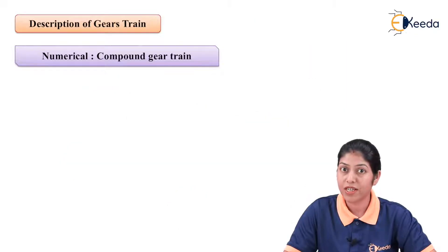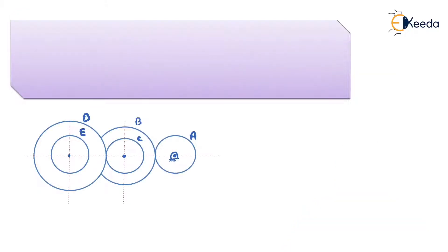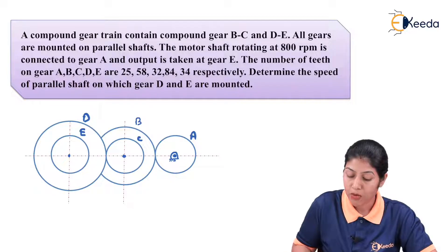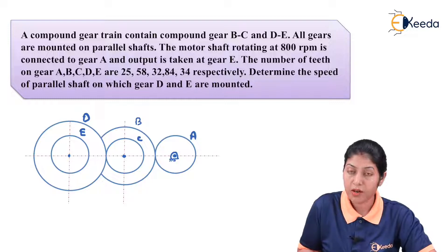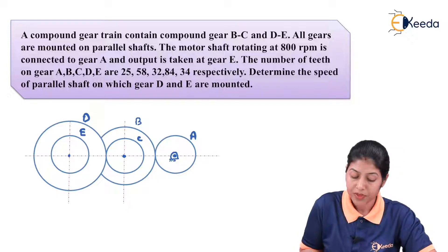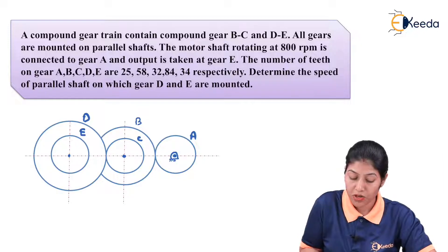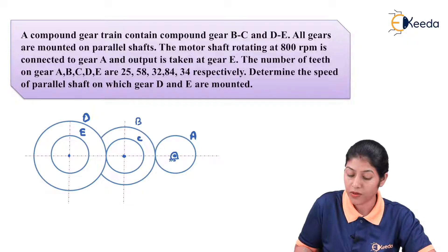Let's start the numerical which is related to the concept of compound gear train. A compound gear train contains compound gears B and C, and D and E. All gears are mounted on parallel shafts. The motor shaft rotating at 800 rpm is connected to gear A and output is taken at gear E. The number of teeth on gear A, B, C, D, E are 25, 58, 32, 84, 34 respectively.